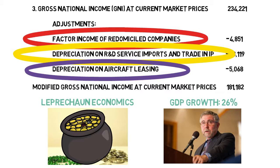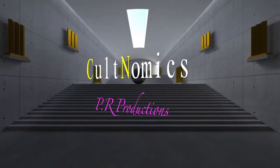Finally, there is depreciation on aircraft leasing. Ireland is an important hub for multinational firms engaged in aircraft leasing, and the balance of payments shows that operational leasing has recorded a three-fold increase. Irish resident firms now own these aircraft, so the assets are included in Irish capital stock, which inflates our capital and therefore our GDP figure. For these three reasons, we have had to produce a Modified GNI figure — shown as 181 billion — far lower than our claimed GDP figure. I hope you come back to Cultnomics soon. Bye for now.